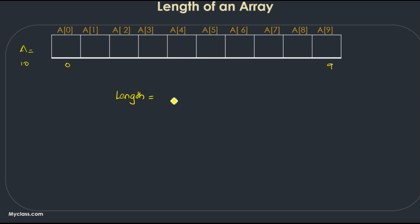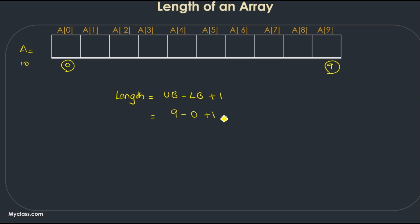Length of an array equals upper bound minus lower bound plus 1. The upper bound is the index of the last element and the lower bound is the index of the first element. So in this particular example, 9 minus 0 plus 1 equals 10. That means array 'a' contains 10 elements — the length of this array is 10.